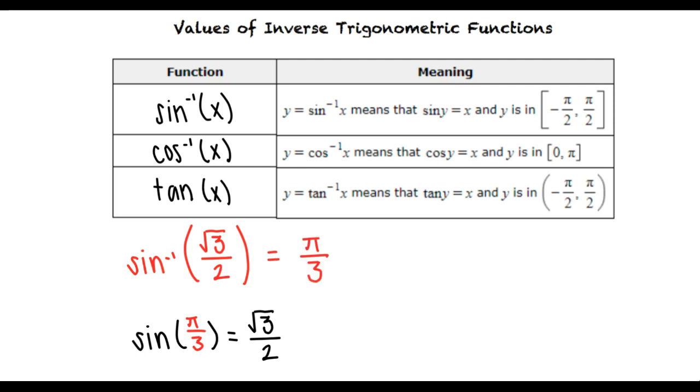Why don't we try one more example? Let's say we want to find the inverse tangent of negative square root 3 over 3 in radians. This means we need to find the angle y within the range negative pi halves to pi halves, such that tangent y equals negative square root 3 over 3.